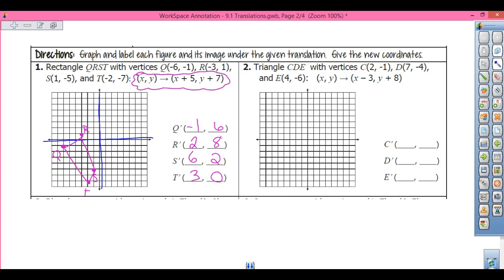So there is my new image. I just have to plot the points. So (-1, 6) and I label that Q prime. R prime is (2, 8). S prime is (6, 2). And T prime is (3, 0). So all we did is we shifted it over five and up seven.